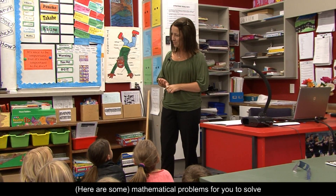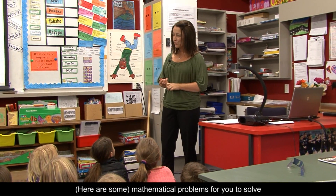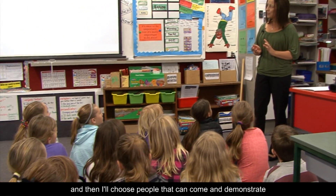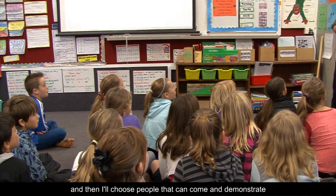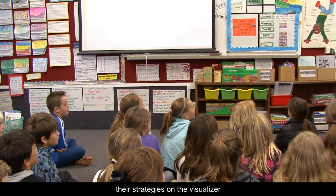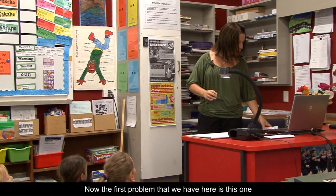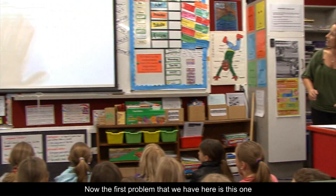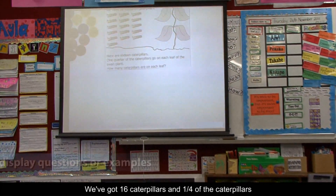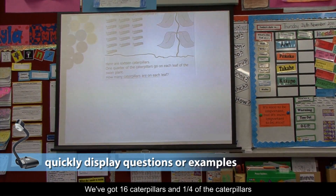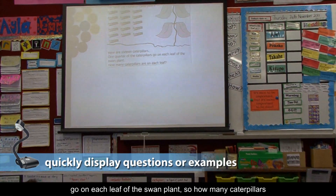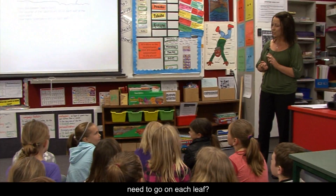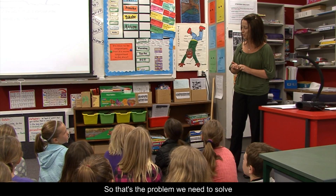Some mathematical problems for you to solve, and I want you discussing these problems with a buddy, and then I'll choose people that can come and demonstrate their strategies on the visualiser. The first problem is this one: we've got 16 caterpillars and one quarter of the caterpillars go on each leaf of the swan plant. So how many caterpillars need to go on each leaf? That's the problem we need to solve.